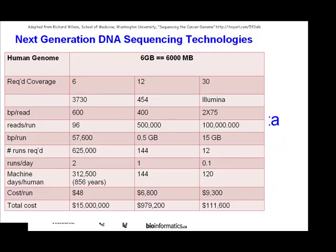With longer reads there's more chance of overlap and fewer gaps, so you need less coverage. If you assume a Poisson distribution of your pieces and how well they overlap each other — with a lot of short reads, the chances of hitting another one is much smaller, so you need more reads.